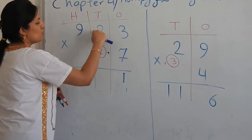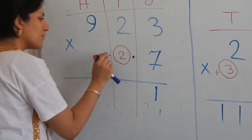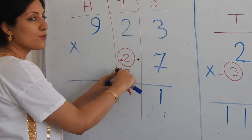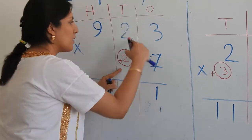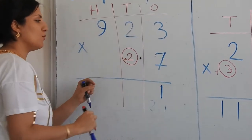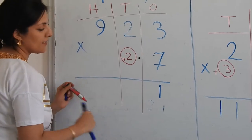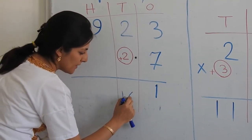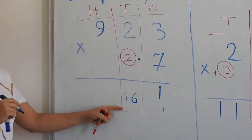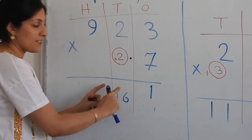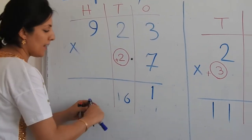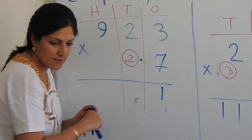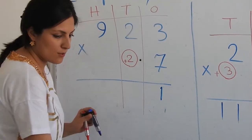Seven times two, fourteen. Plus two. Don't forget the two. I have a small two here I should add it. Seven times two, fourteen plus two, sixteen. I cannot write sixteen totally here. Again, put down six and carry one to next door.